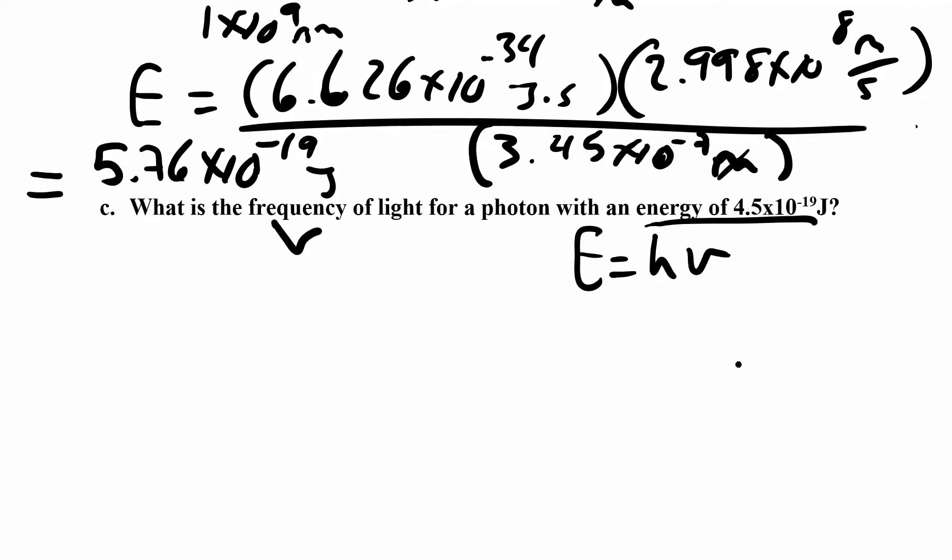We know h. We're trying to find nu. So you can either rearrange this equation, right? Divide both sides by h, or you can just plug it in. I'll show you the just plug it in method. Here we have 4.5 times 10 to the negative 19 joules is equal to h, which is our constant.